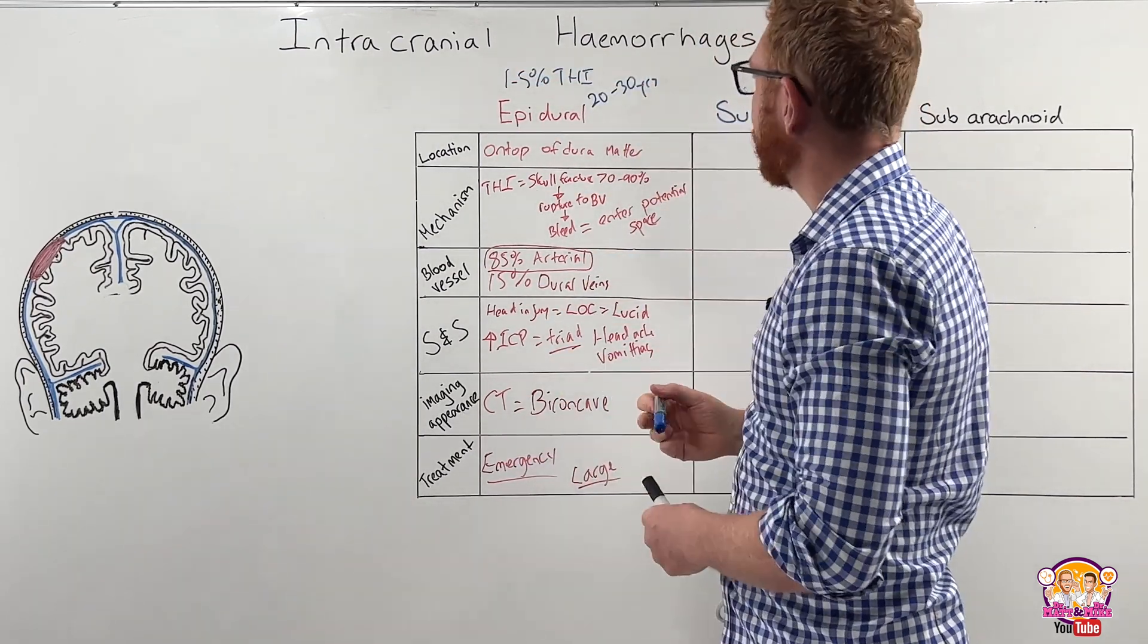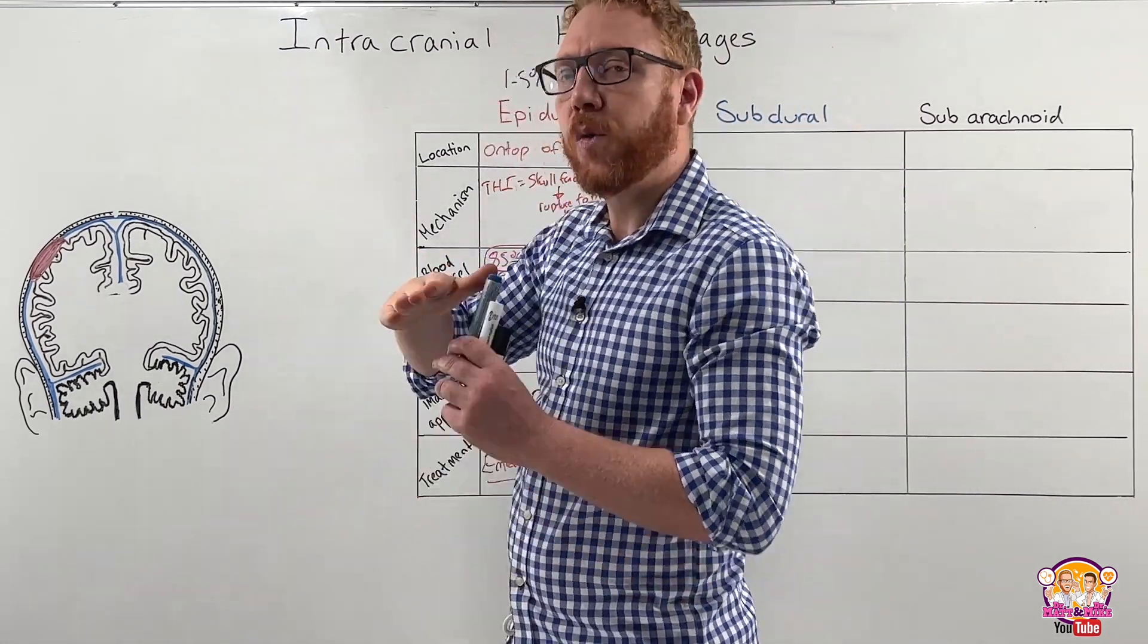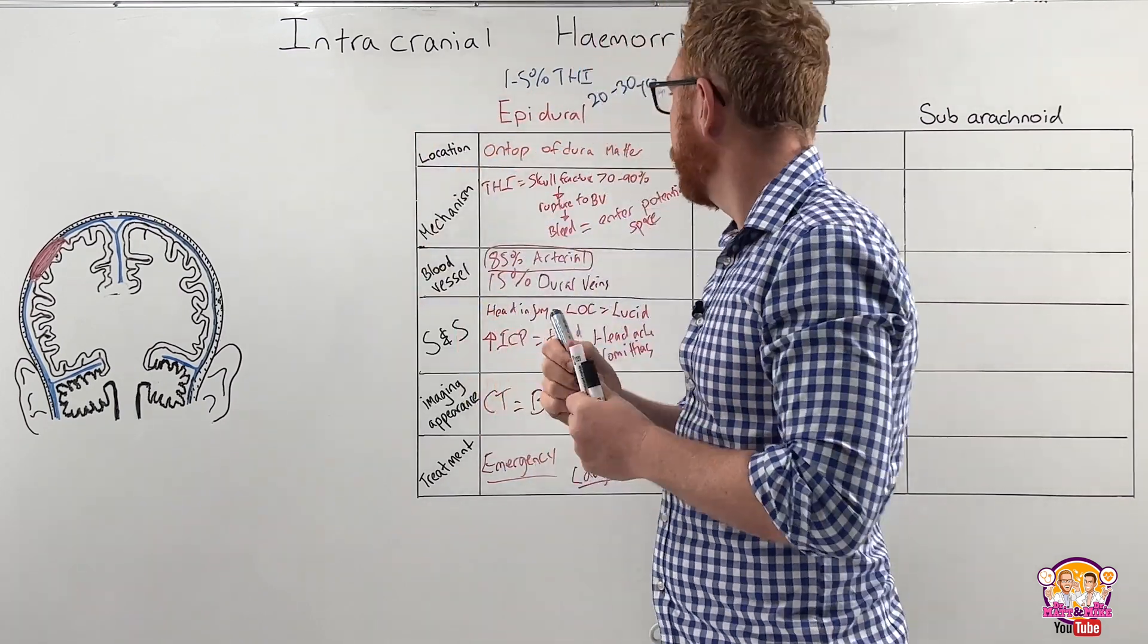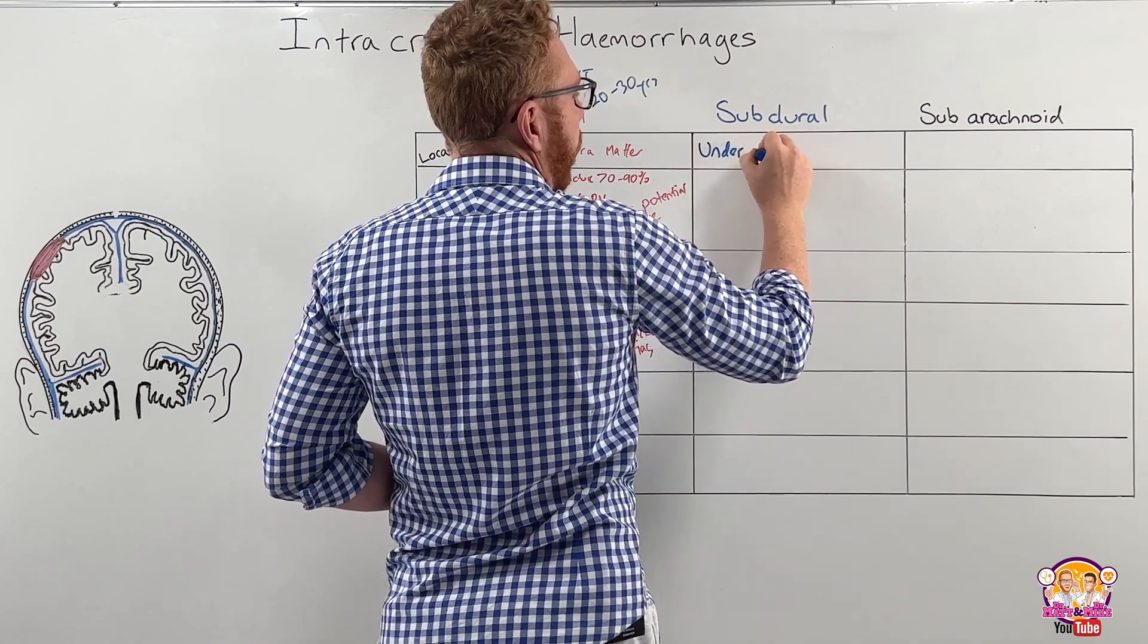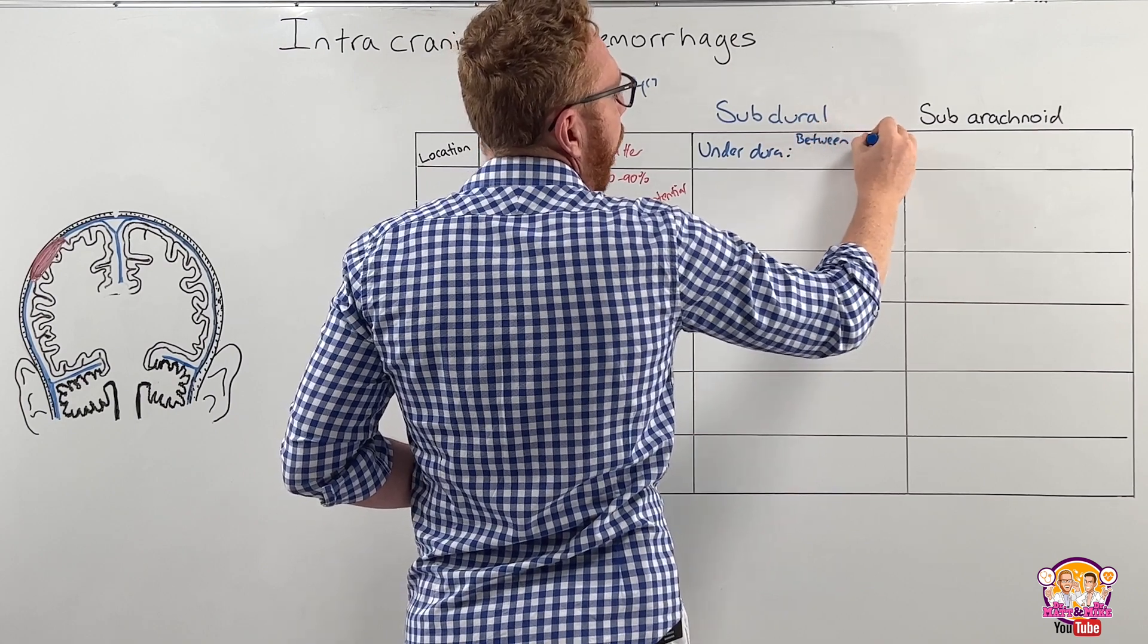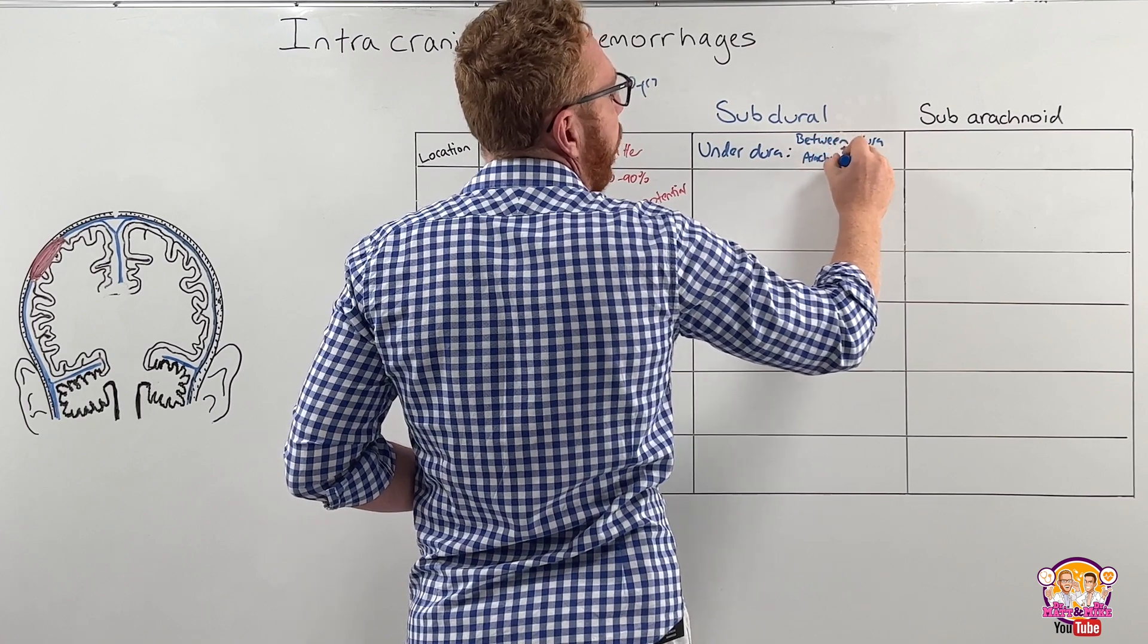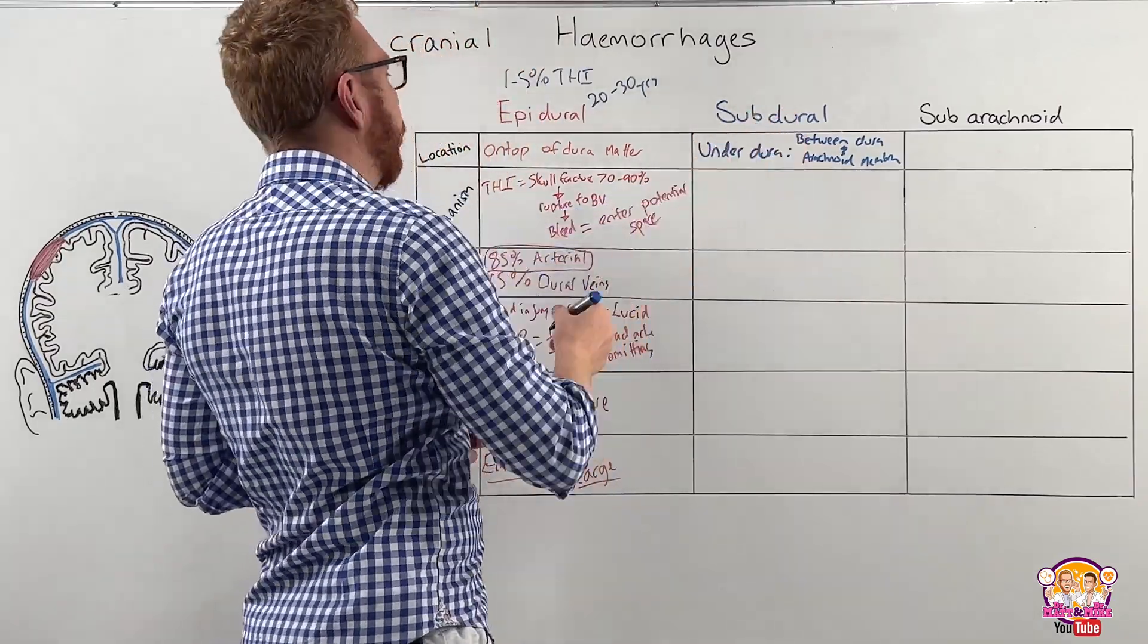Now let's move across to the subdural. So the subdural is going to be between the dura mater and the arachnoid mater. So it's going to be under the dura, between dura and arachnoid or arachnoid membrane. So that's where the subdural bleeds will take place.